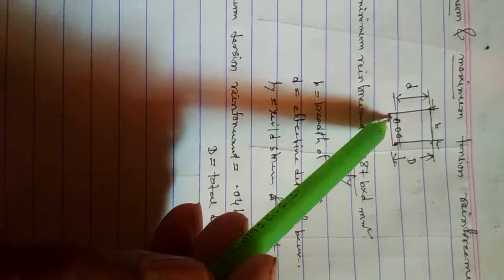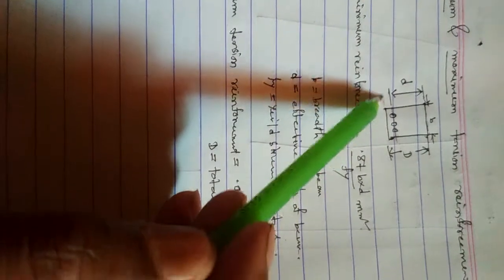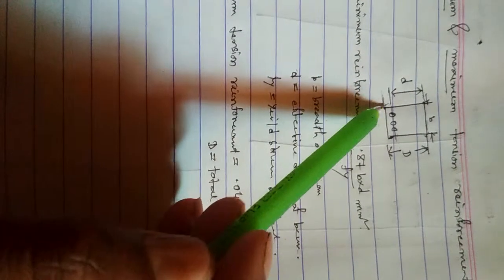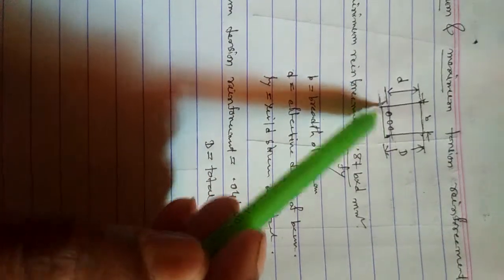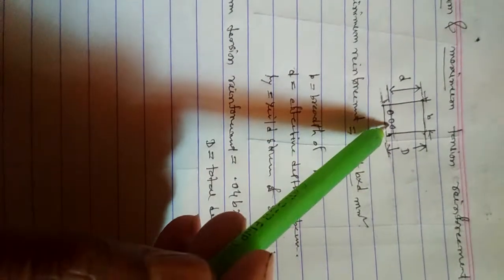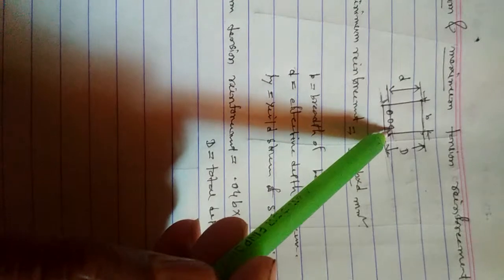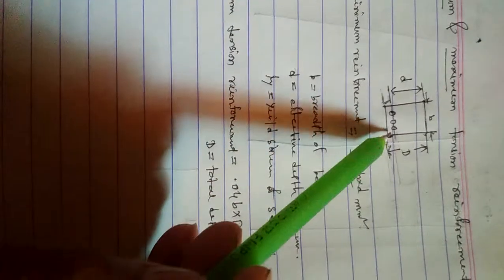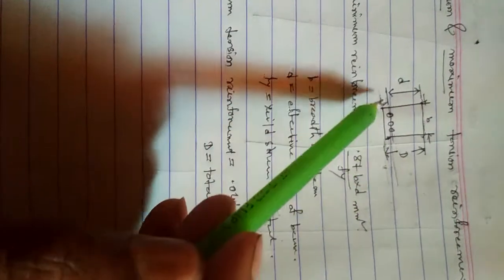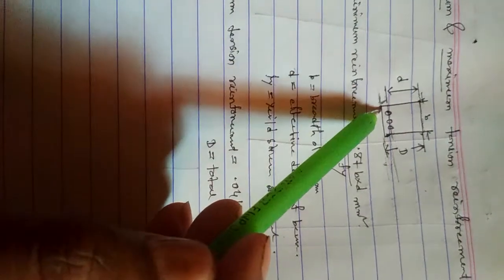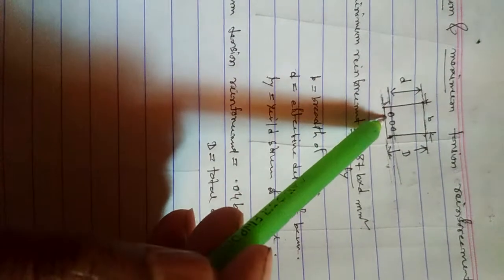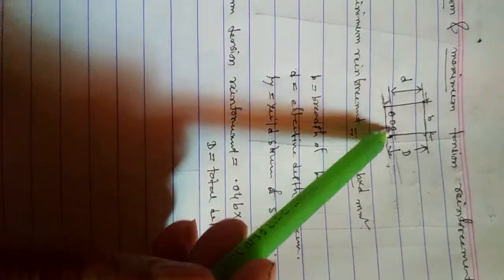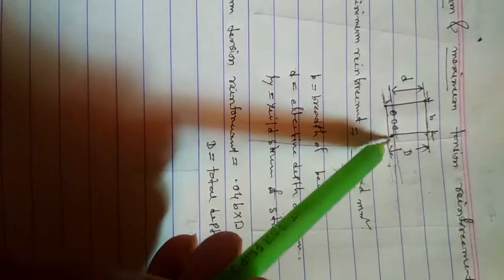The effective cover is the distance from the extreme tension portion to the center of the tension bar. The clear cover is the distance from the bottom of the beam to the bottom of the reinforcement. The effective cover is the distance from the bottom of the beam to the center of the tension reinforcement.